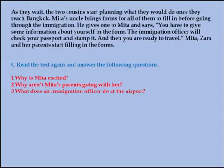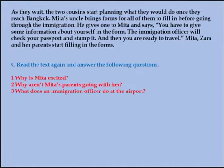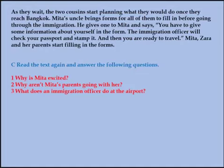As they wait, the two cousins Mitha and Zara start planning — plan means decide on and make arrangements for any purpose. Once they reach Bangkok, Mitha's uncle brings forms for all of them. Brings means take or go with someone or something to a place. Forms means printed documents with blank spaces for information to be inserted, for all of them — Mitha, Zara and Zara's parents — to fill in. Fill in means to complete the form with the requested information, before going through the immigration.